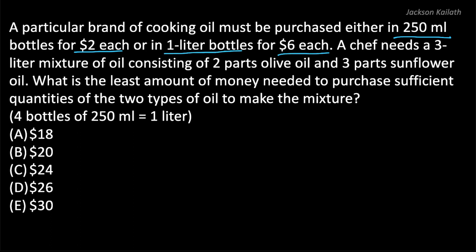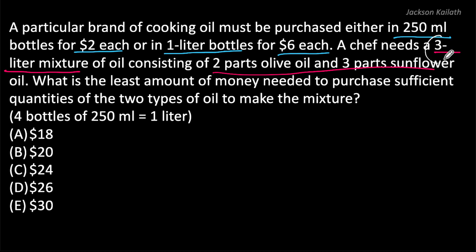The question goes on to say a chef needs a three-liter mixture of oil consisting of two parts olive oil and three parts sunflower oil. What is the least amount of money needed to purchase sufficient quantities of the two types of oil to make the mixture? The chef needs three liters in a 2:3 ratio of olive oil to sunflower oil. Let's first find the range of possible costs to see if we can eliminate wrong options.